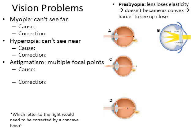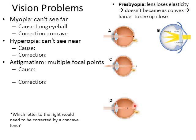A couple of things on vision problems — there are two main ones we're talking about: myopia and hyperopia. Myopia means you can't see far, and the cause is going to be too long of an eyeball. When the eyeball is too long, as shown here in diagram D, the light is focused before the retina. You end up needing a concave lens in your glasses or contacts to actually focus the light less strongly, moving the focal point back to hit the retina.